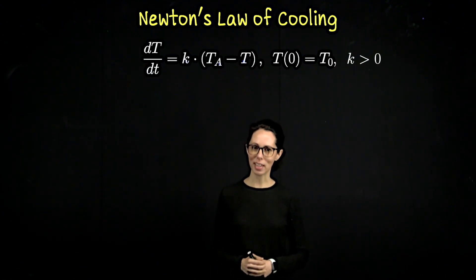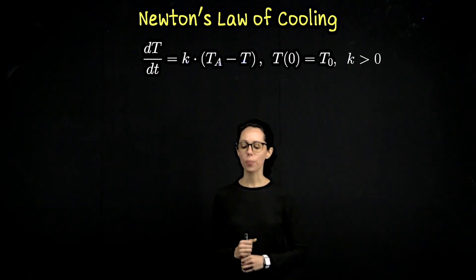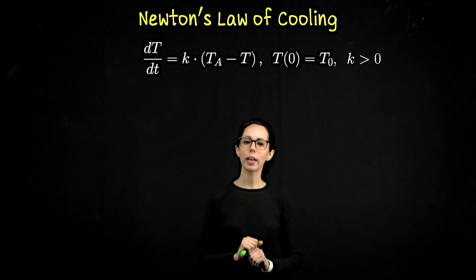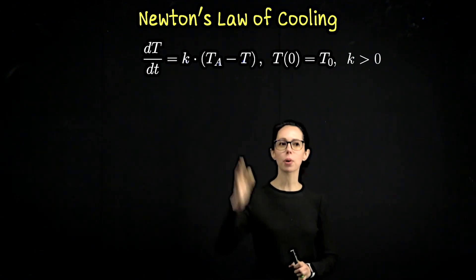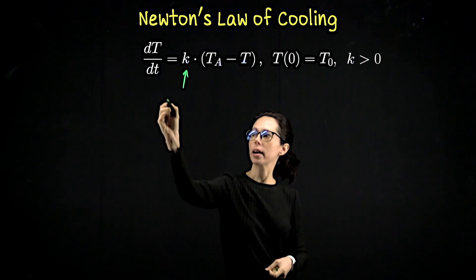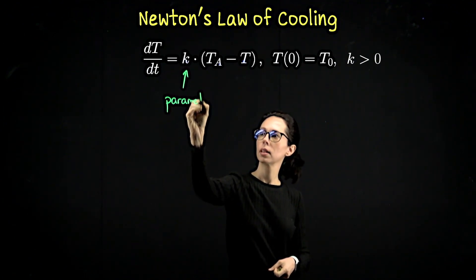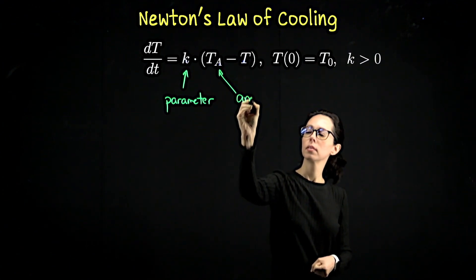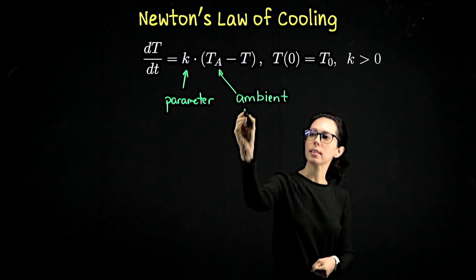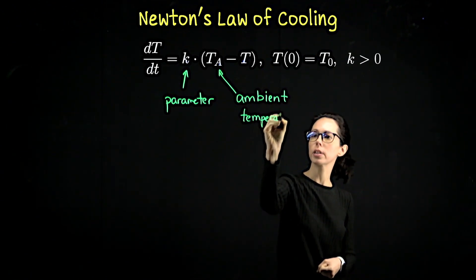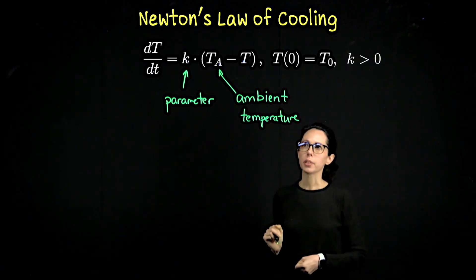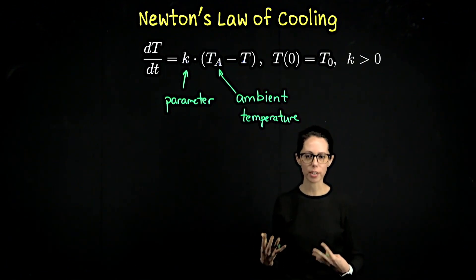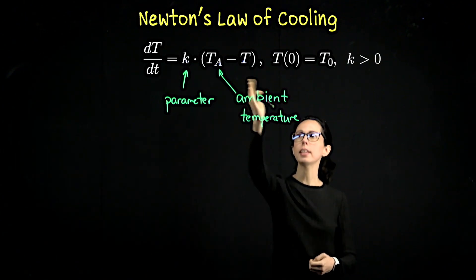Let capital T be the temperature at time little t, so hopefully every time I say t it's clear which t I'm talking about — temperature versus time. The rate of change of temperature with respect to time equals some parameter k times the difference between the ambient temperature — denoted with subscript a — and the current temperature T. Sometimes you'll see subscript e for environmental, or m for medium. The idea is it's like the room temperature: the temperature of what's around the object whose temperature is changing.